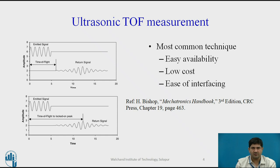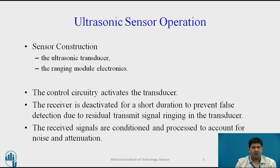Regarding construction, it typically includes one ultrasonic transducer, a ranging module, and electronics. The range and accuracy significantly depend upon the onboard electronic circuitry and signal processing. In modern smart sensors, the onboard circuitry is as important as the transducer itself. The control circuitry activates the transducer signal, and then the receiver is deactivated for a short period to prevent false detection due to residual transmit signal — which is called ringing.